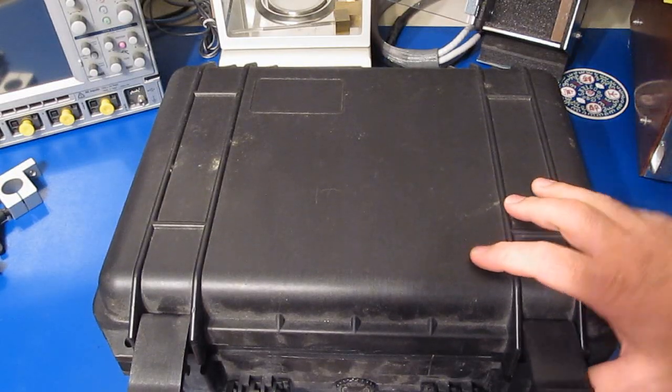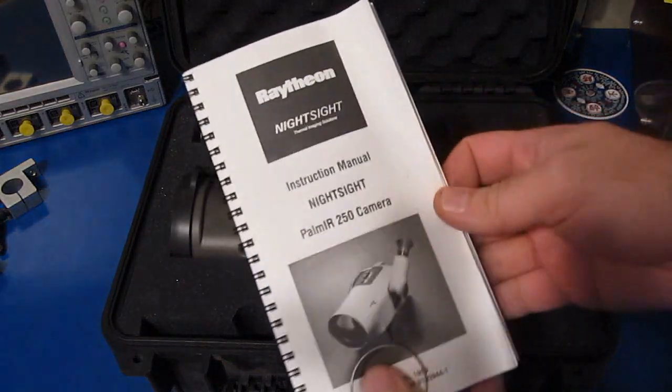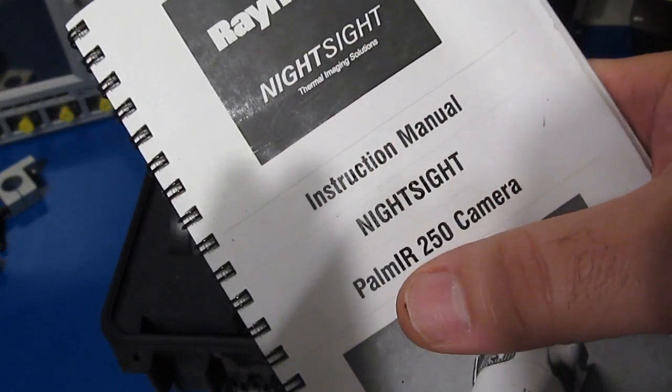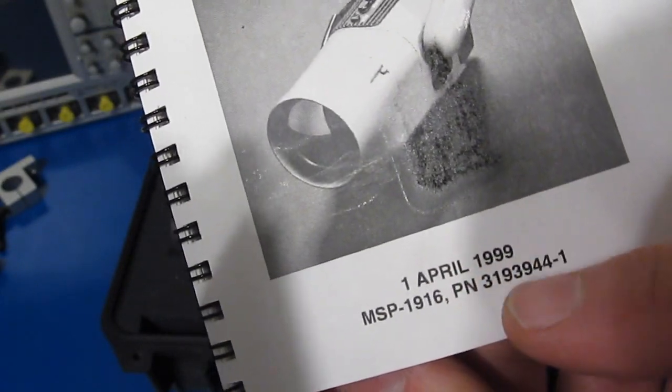Hello again and welcome. Inside this case we have a very old Raytheon infrared camera. This is the NightSight Palm IR250. This was produced at the end of 1999.